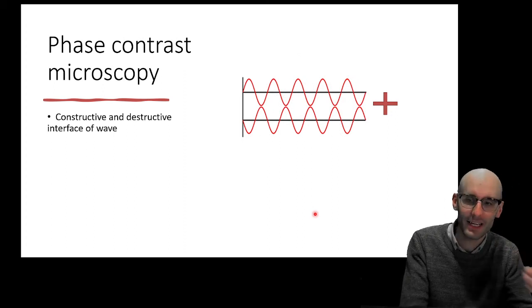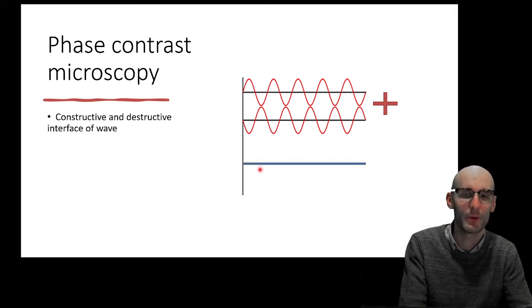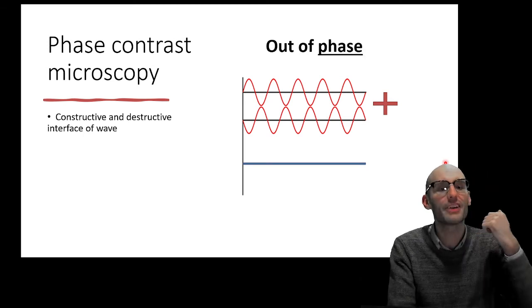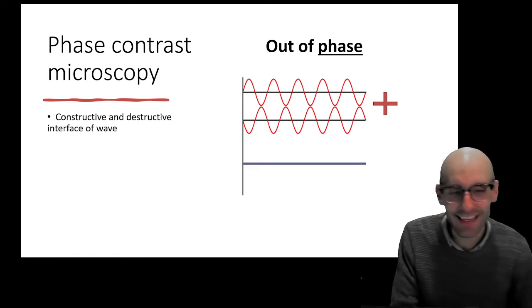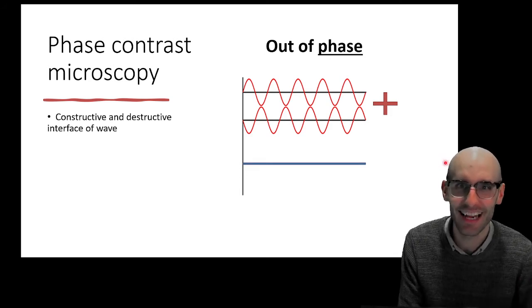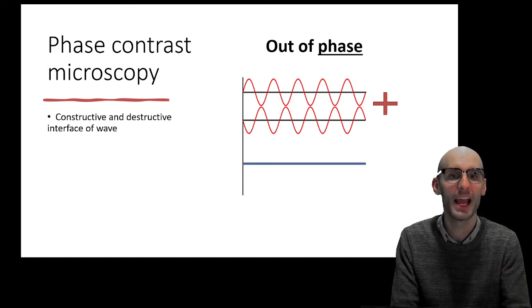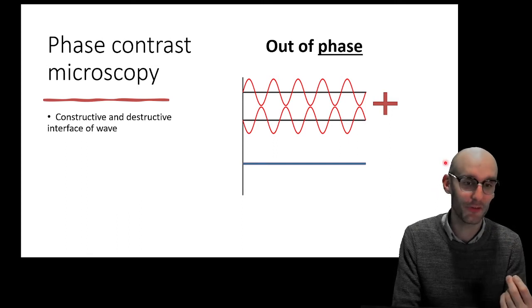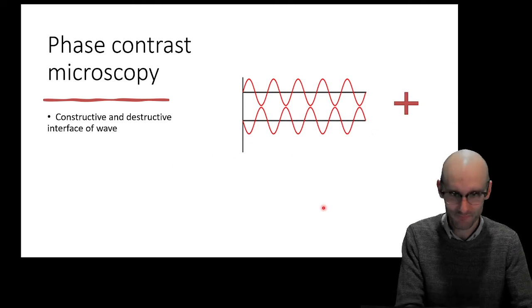Now this is destructive interference of the waves. Where there's a peak, there is a trough. If we were to add those two together, we get a flat line. This is destructive interference, and it's because they're out of phase. Now you can see that word popping up, phase. That has something to do with how this microscopy works, doesn't it? Yeah, because it's phase contrast microscopy. And it's all to do with this process of constructive interference, which would make something brighter, and destructive interference, which would make something darker, because it destroys the light wave, right?